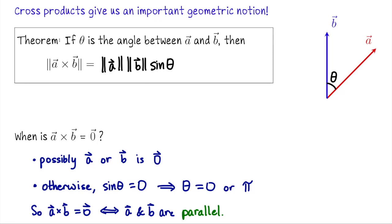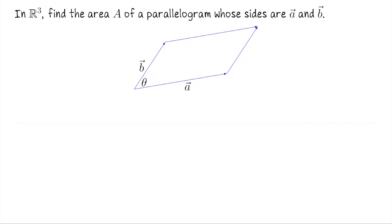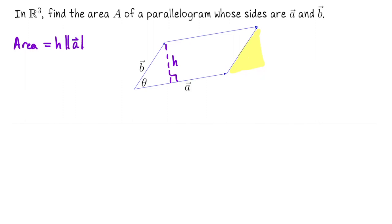We're going to use this formula to compute the area of a parallelogram in R3 whose sides are a and b. Imagine a and b are two vectors in R3 forming the sides of a parallelogram, with their tails at the same point. The area of this parallelogram equals h times the length of vector a, where h is the length of the altitude dropped down from the top side.